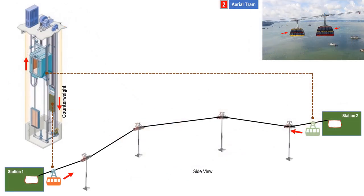The movements and mechanisms of an aerial tram is like an elevator. The elevator cabin and the counterweights are the equivalent of the two cabins of an aerial tram. The movement of the cabin and counterweight is vertical in a back-and-forth motion.